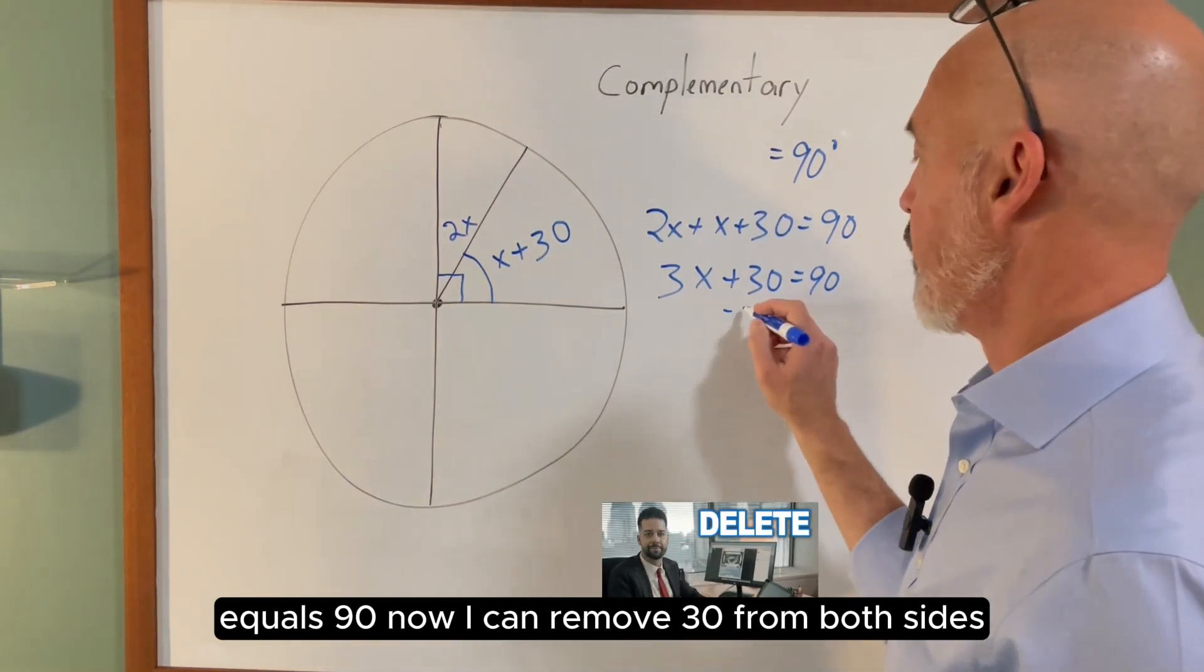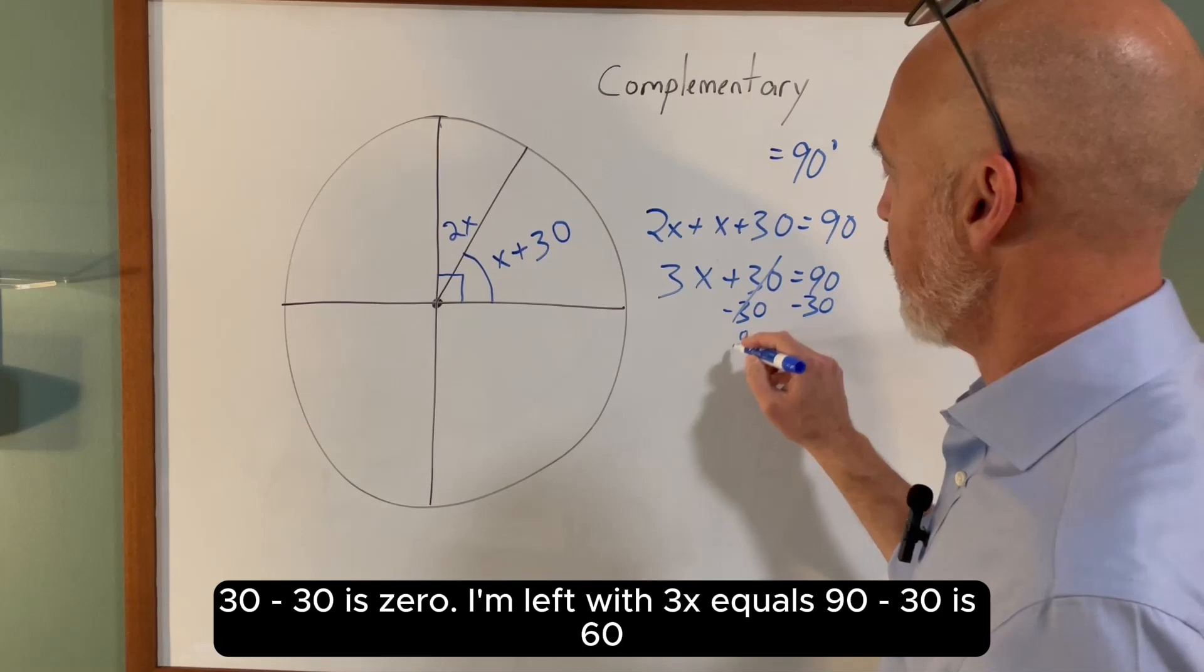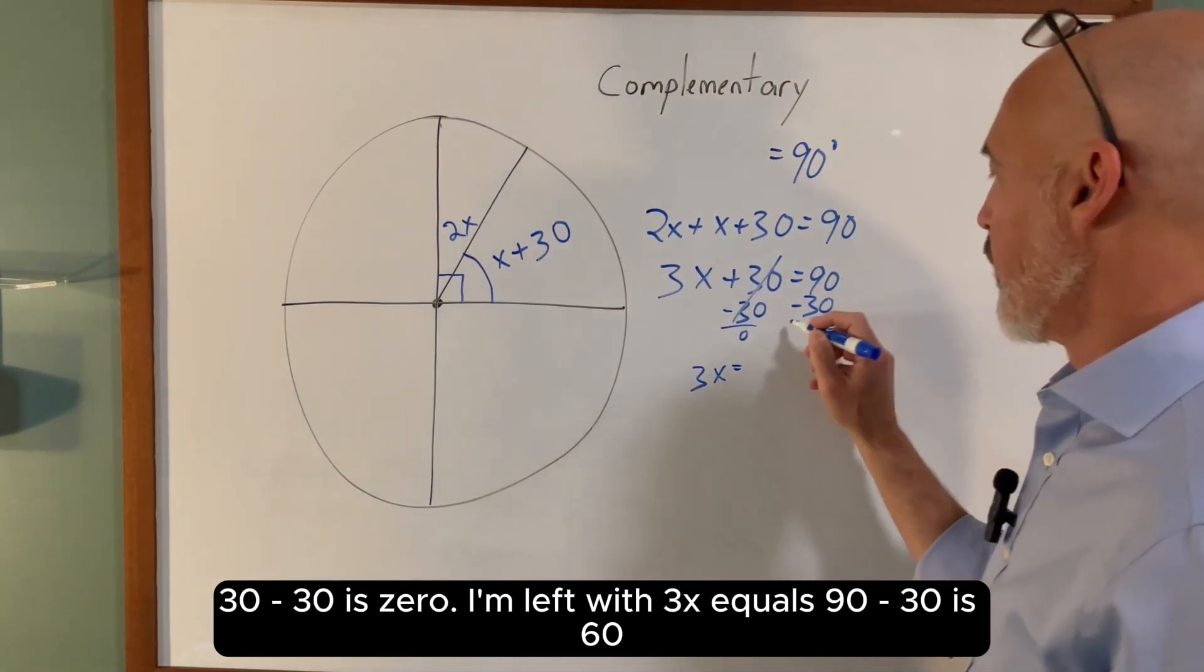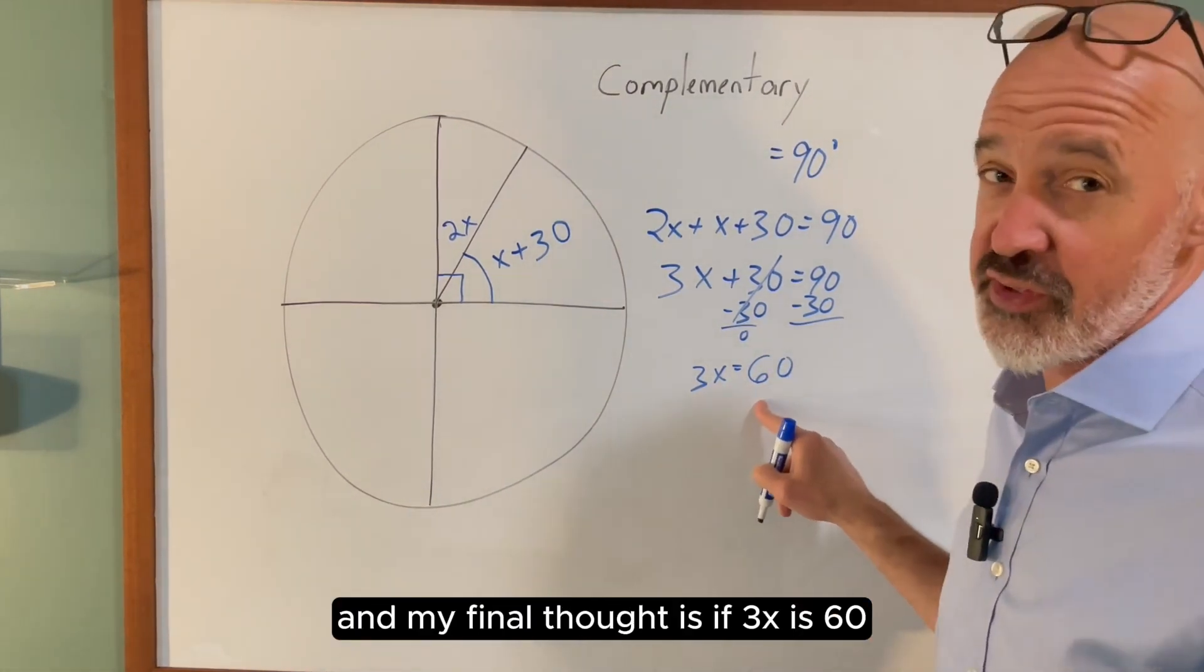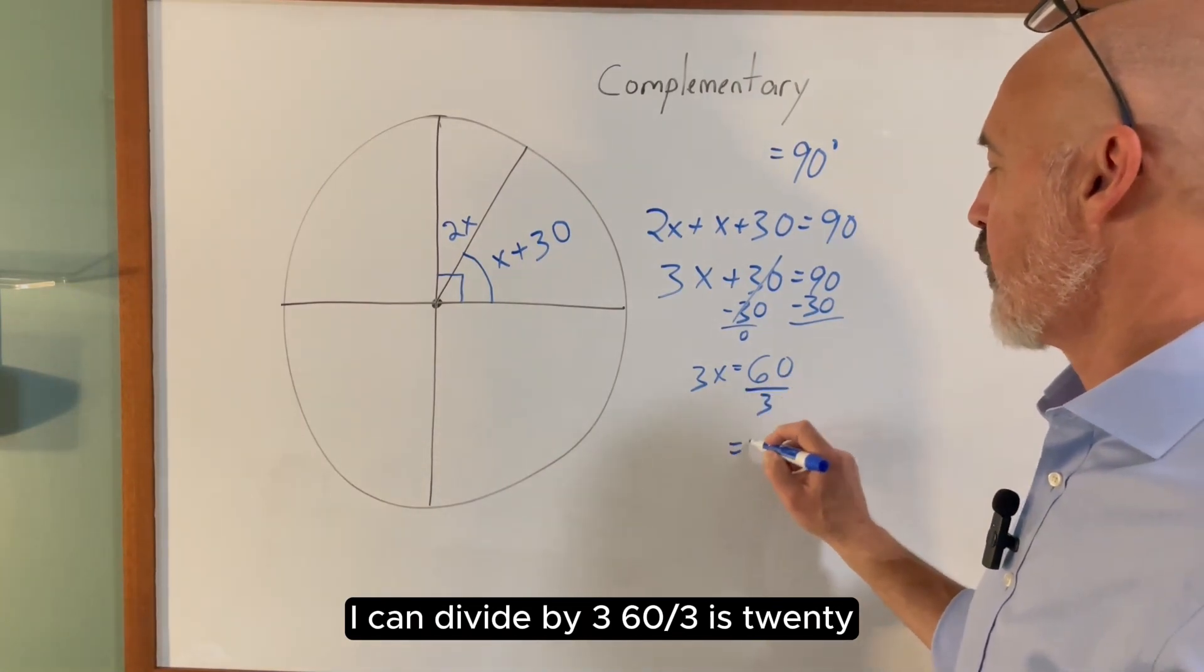Now I can remove 30 from both sides, keeping the equation in balance. 30 minus 30 is zero, I'm left with 3x equals 90 minus 30, which is 60. And my final thought is, if 3x is 60, I can divide by 3. 60 divided by 3 is 20.